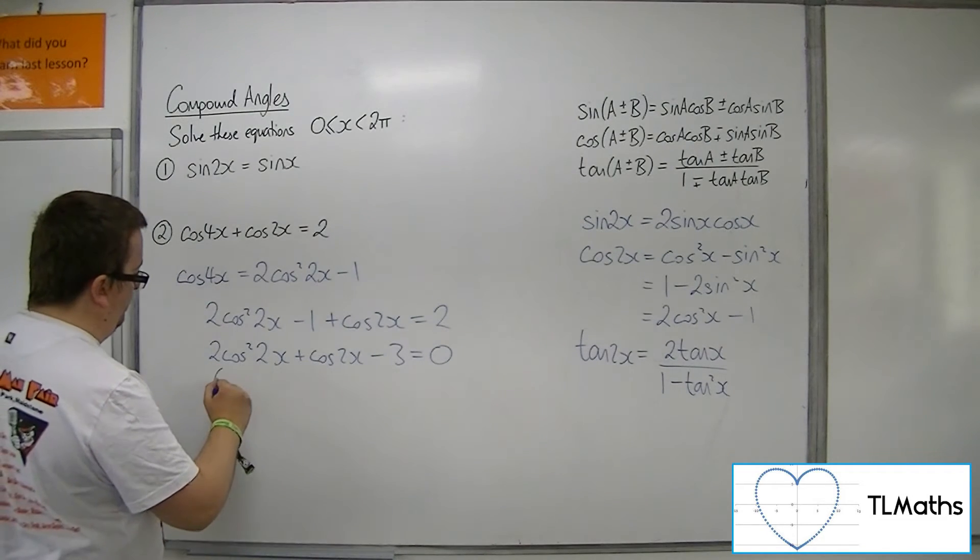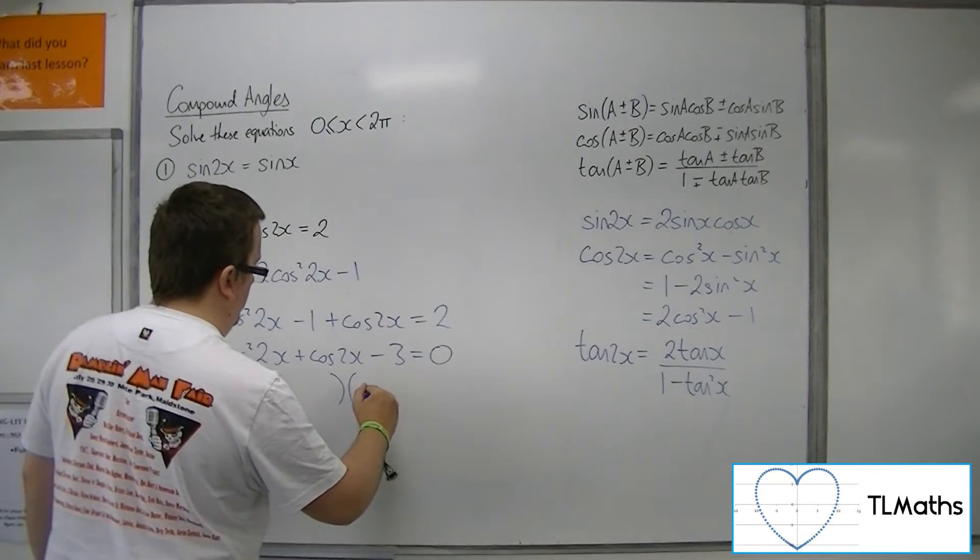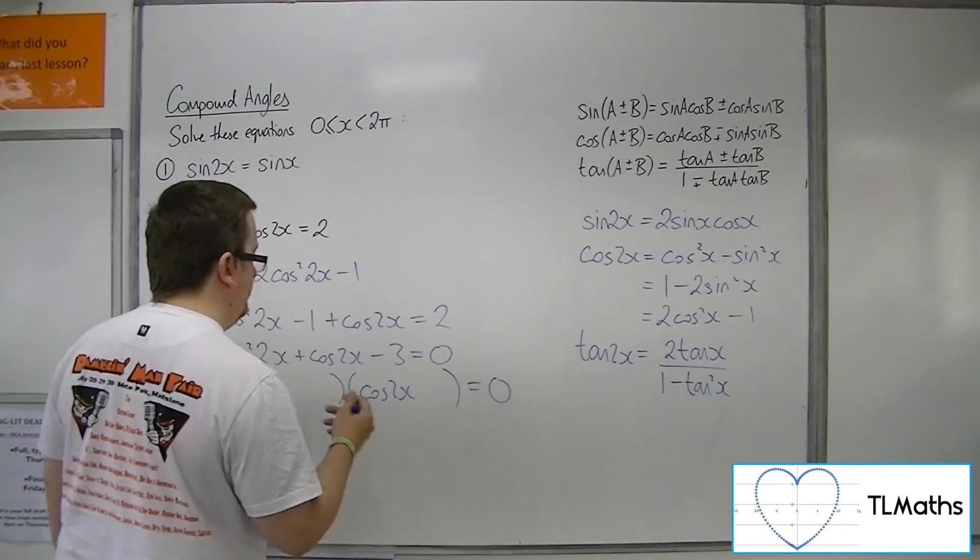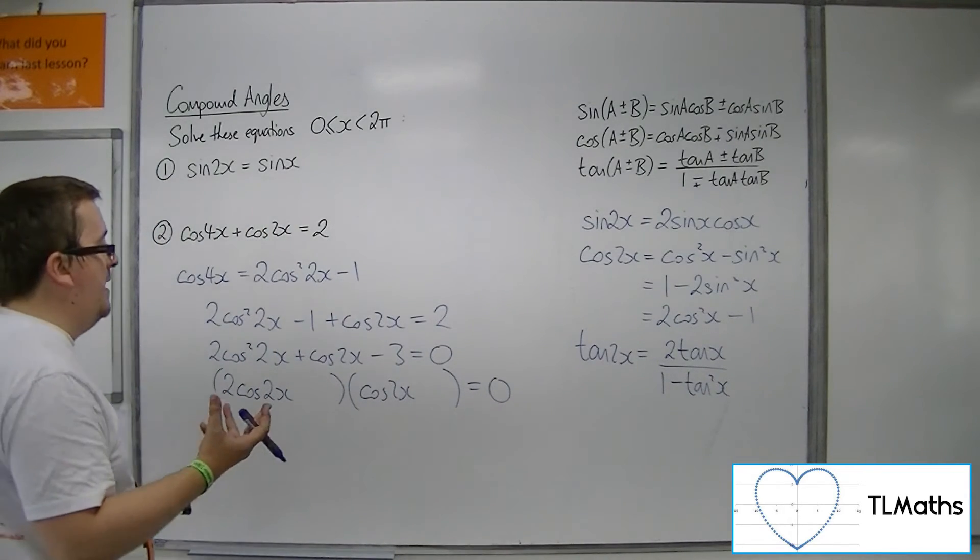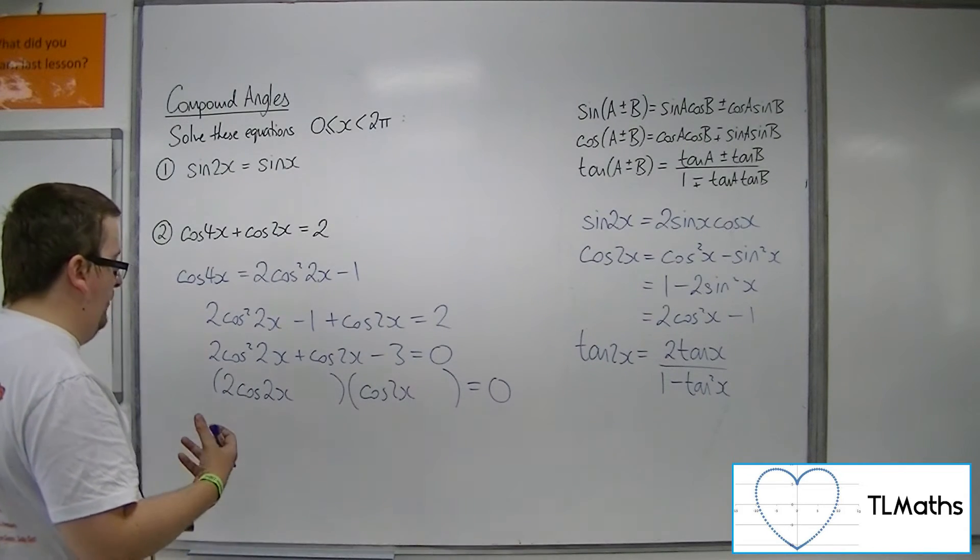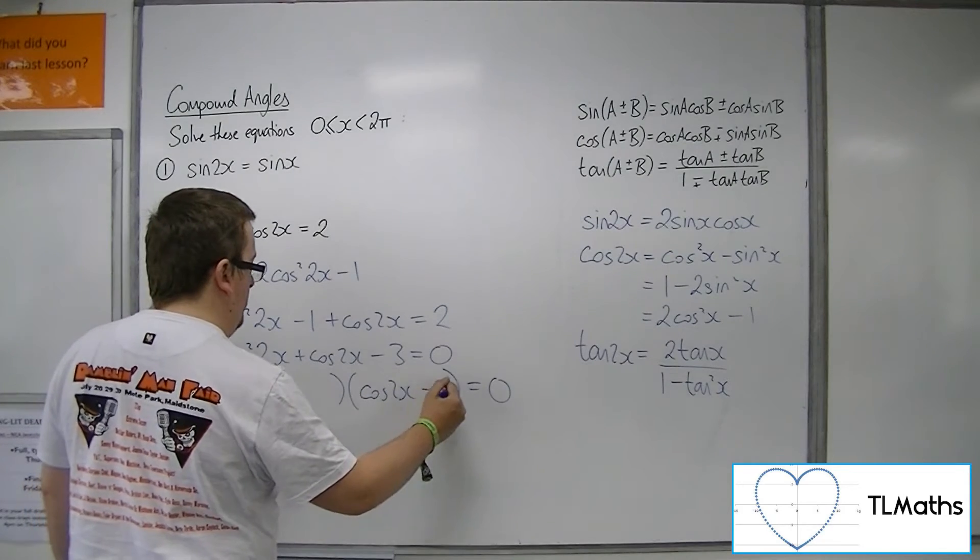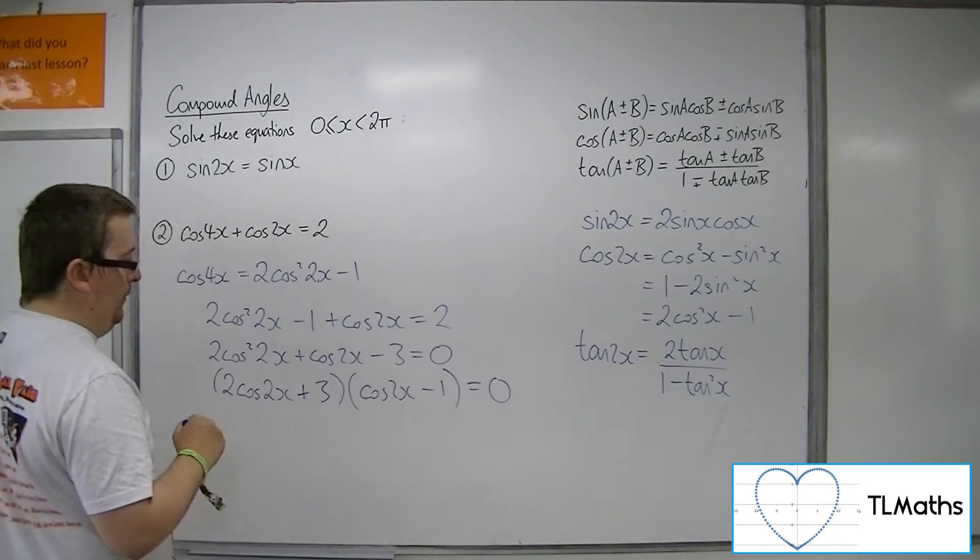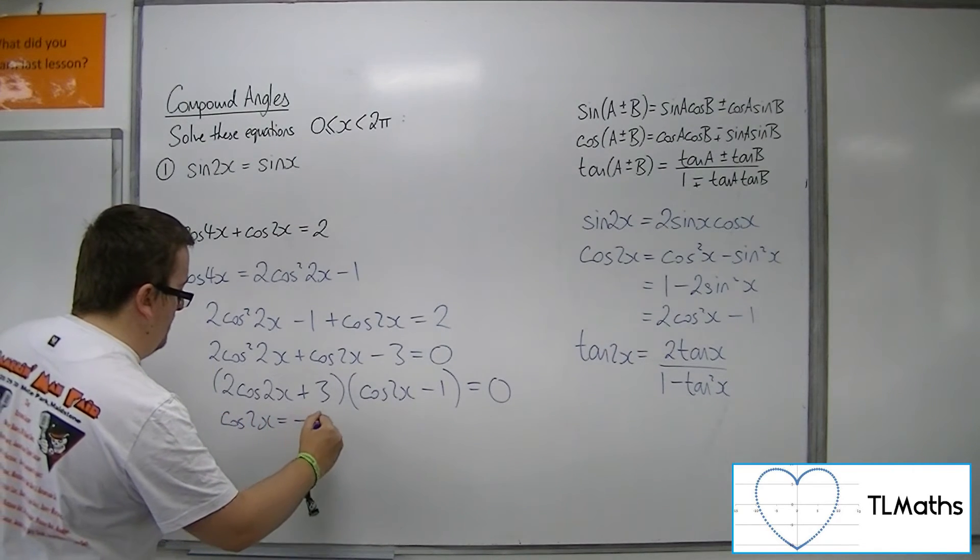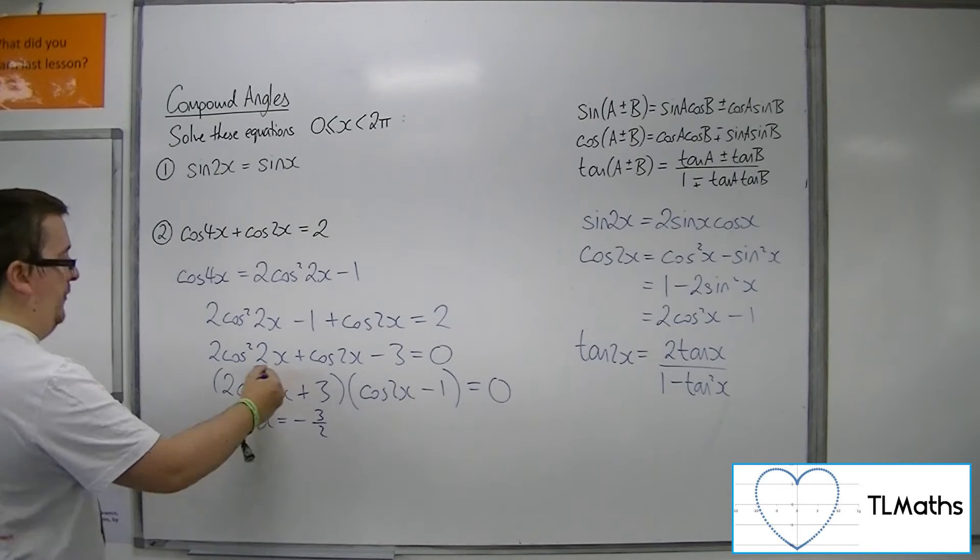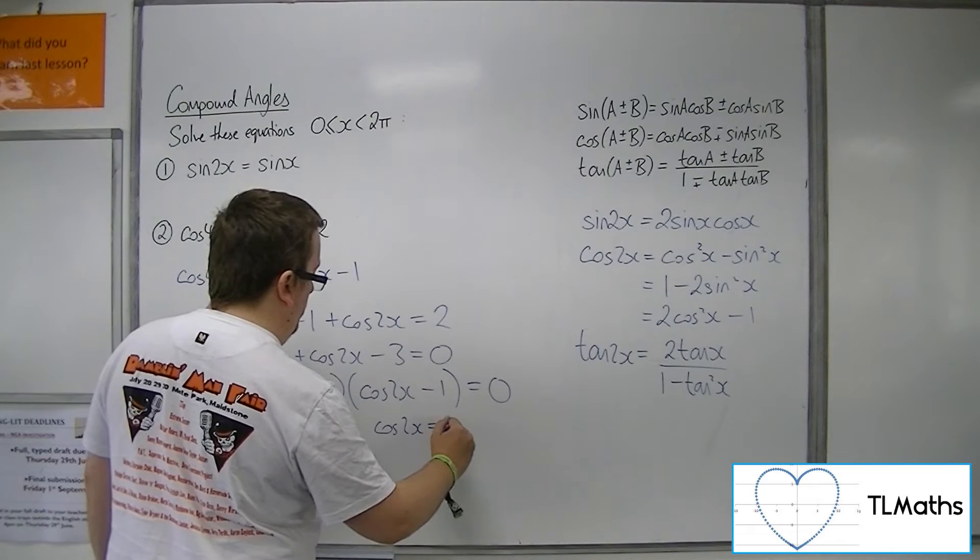Can it factorize? So we'd have 2 cos 2x here, and cos 2x there. So I'm going to need a 3 and a minus 1, or minus 3 and 1. So I'm going to need the 3 over here, I reckon. So minus 1 and plus 3, that does it. So either the cos 2x is minus 3 halves from that bracket, or the cos 2x is equal to 1.